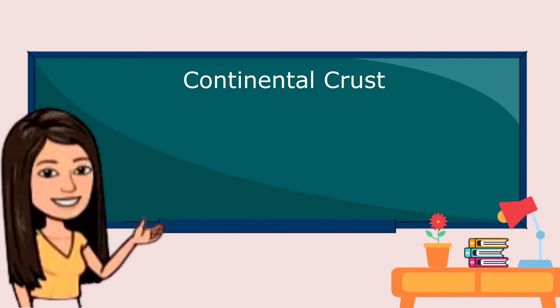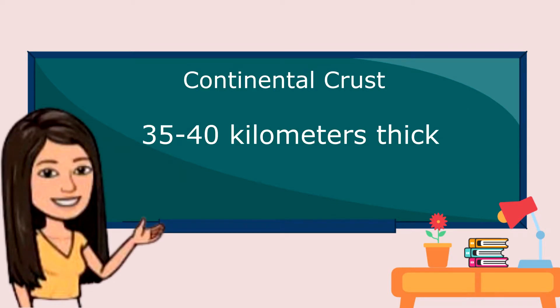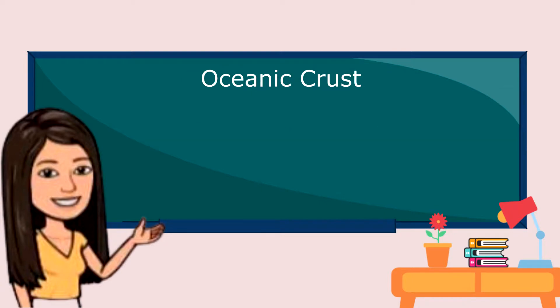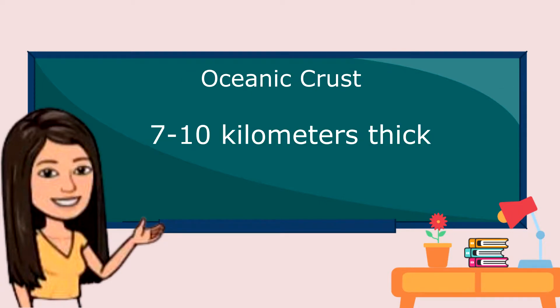Continental crust is mostly 35 to 40 kilometers thick, while oceanic crust is around 7 to 10 kilometers thick.